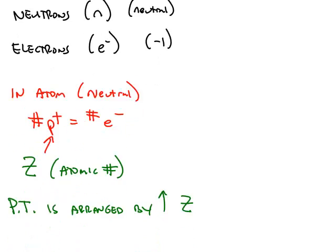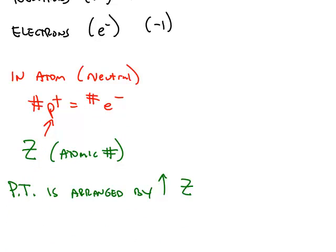An atom starts off electrically neutral, so that means the number of positive charges has to equal the number of negative charges. The number of positive charges, the number of protons, is given by the symbol Z, which is called the atomic number. And the periodic table is arranged by increasing atomic number.